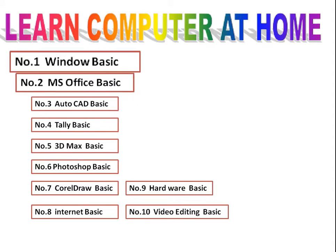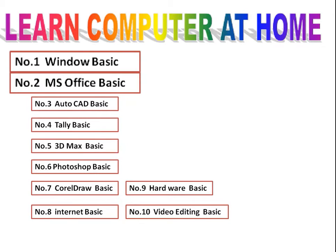Second is MS Office. Microsoft Office is very popular software in the world, and it is also very important. There are seven programs in Office: Excel, Word, PowerPoint, Outlook, and MS Publisher. These are very important and useful programs.